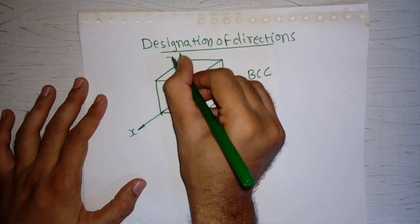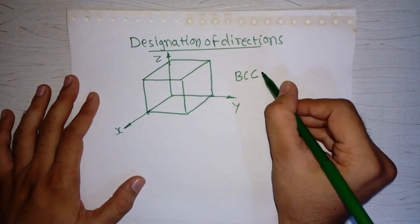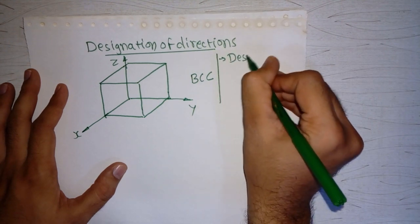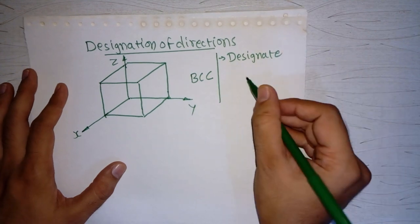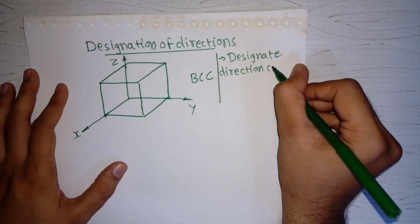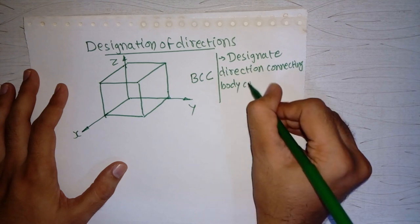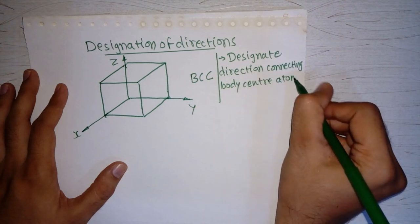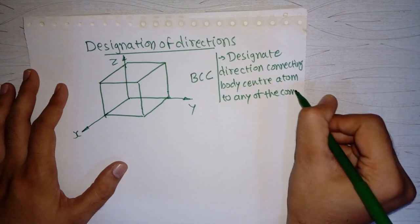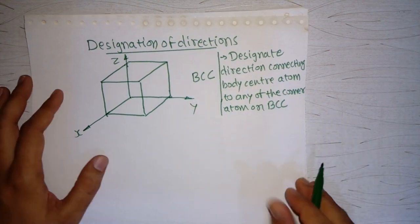This is X, this is Y, and this is Z. The problem statement is: find the direction connecting the body-centered atom to any of the corner atoms on the BCC cell. Let's say this is the problem statement given.